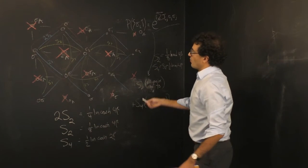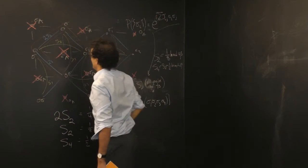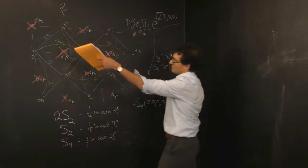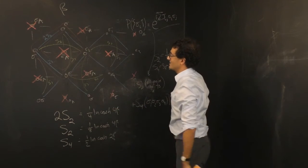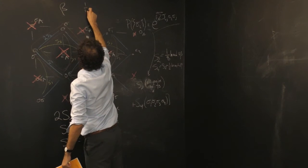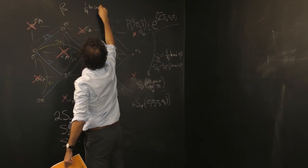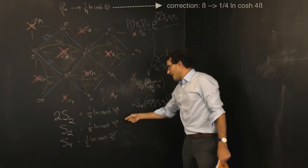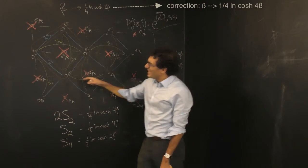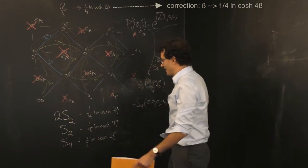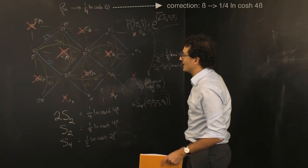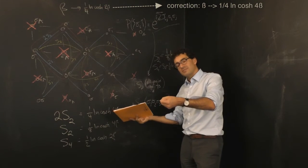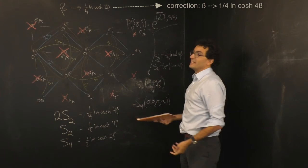We've transformed the original lattice, whose coupling strength was β, into something where you have a new lattice with coupling 1/4 log cosh 4β. It looks like if you were able to neglect the next-nearest-neighbor coupling — it's only half as strong as the blue one anyway — and if you dropped the quartet interaction, then you would be enforcing an approximate renormalization group transformation.